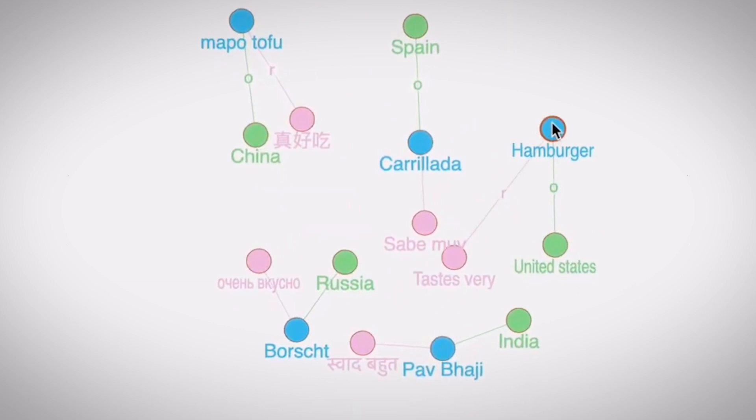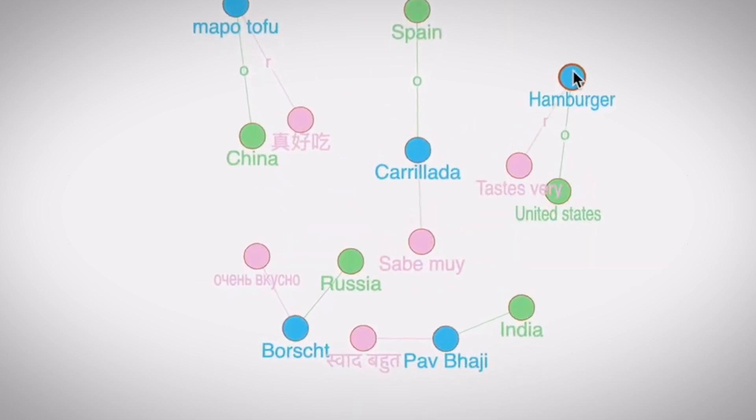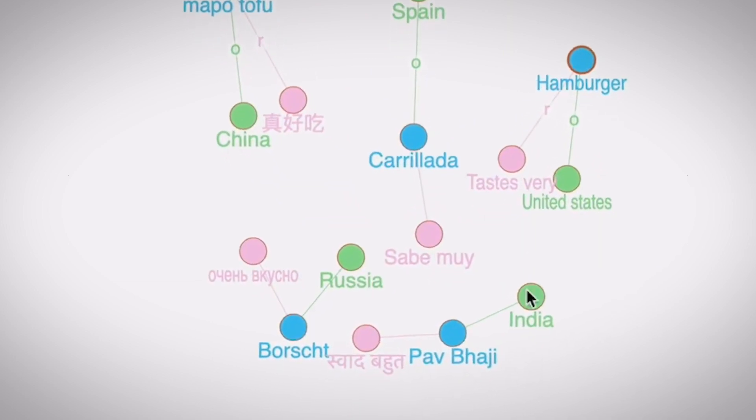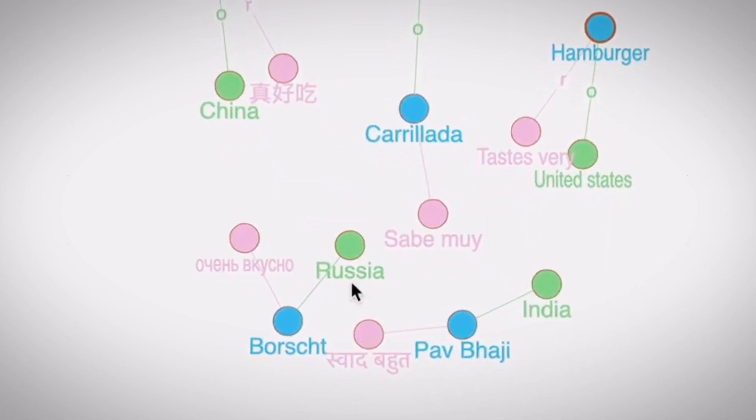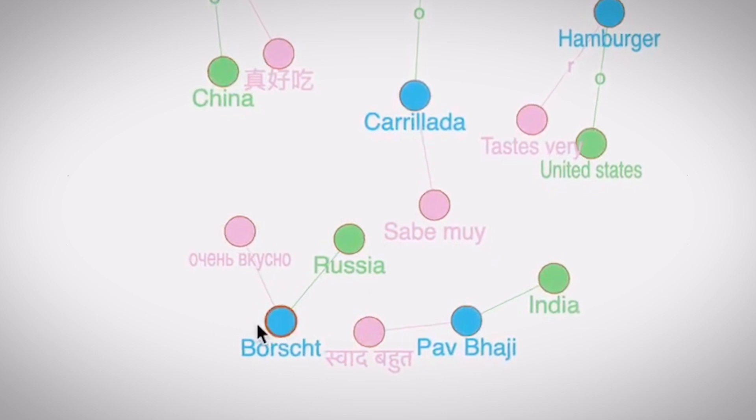In other words, D-graph is not a slap-on on other systems. It is designed to perform for complex, huge graph and GraphQL datasets.